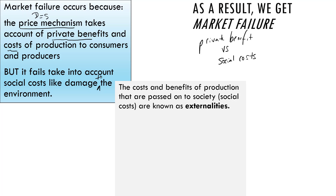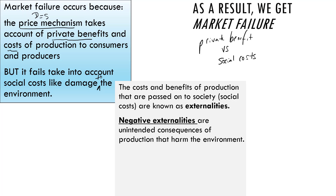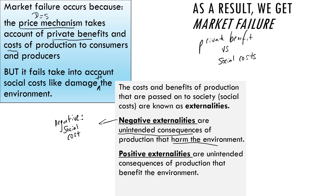Instead we get externalities — side effects of production. We get negative externalities, where there's an unintended consequence of production that harms the environment. This represents a social cost that the price mechanism doesn't take into account. But we can also get positive externalities, where producing or buying things actually benefits the environment — that is a social benefit. So market failure is leading to both negative externalities and positive externalities.